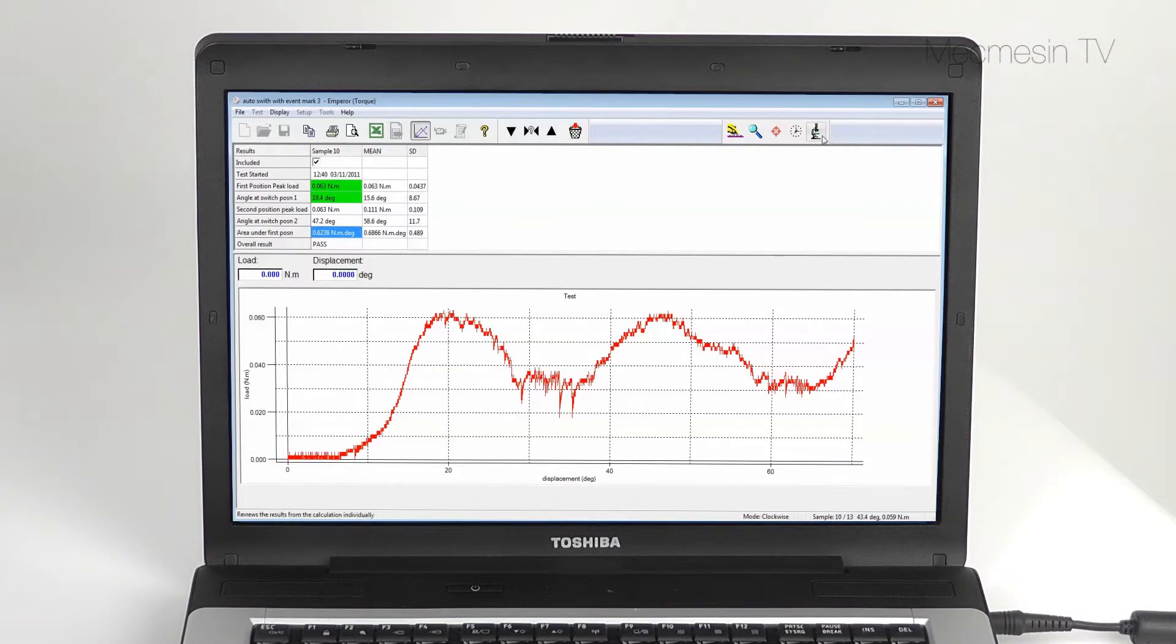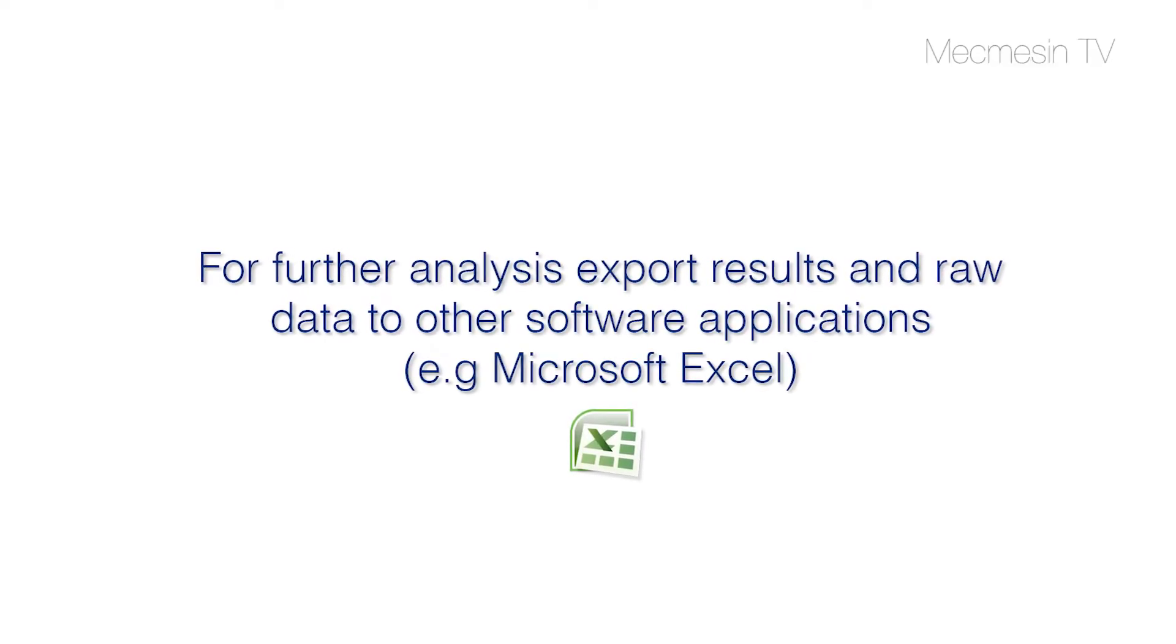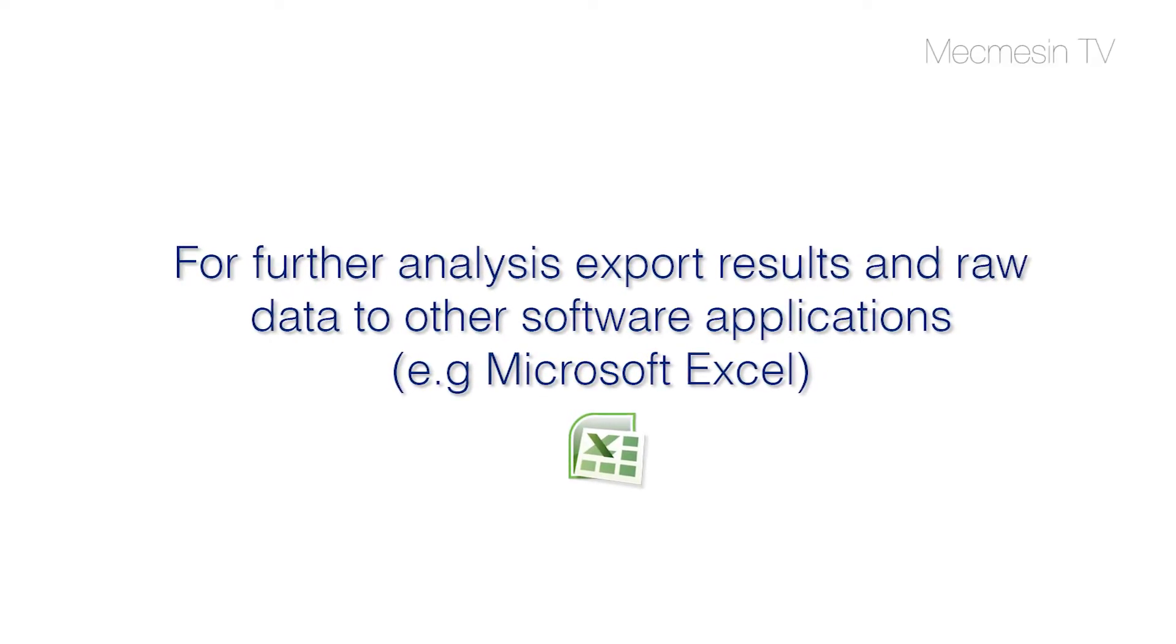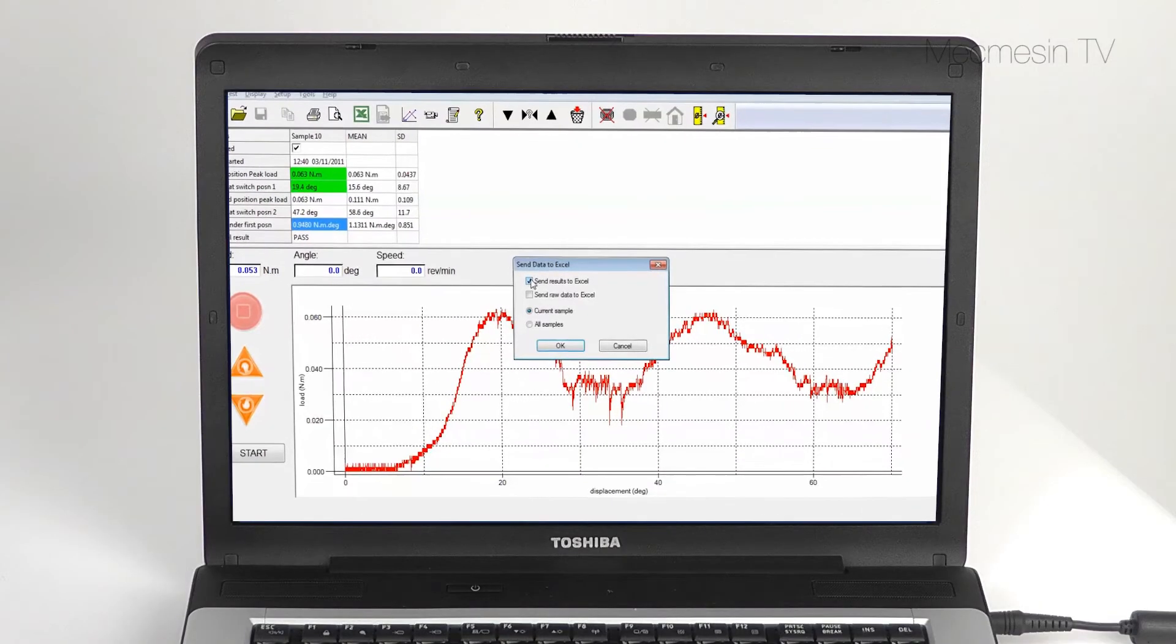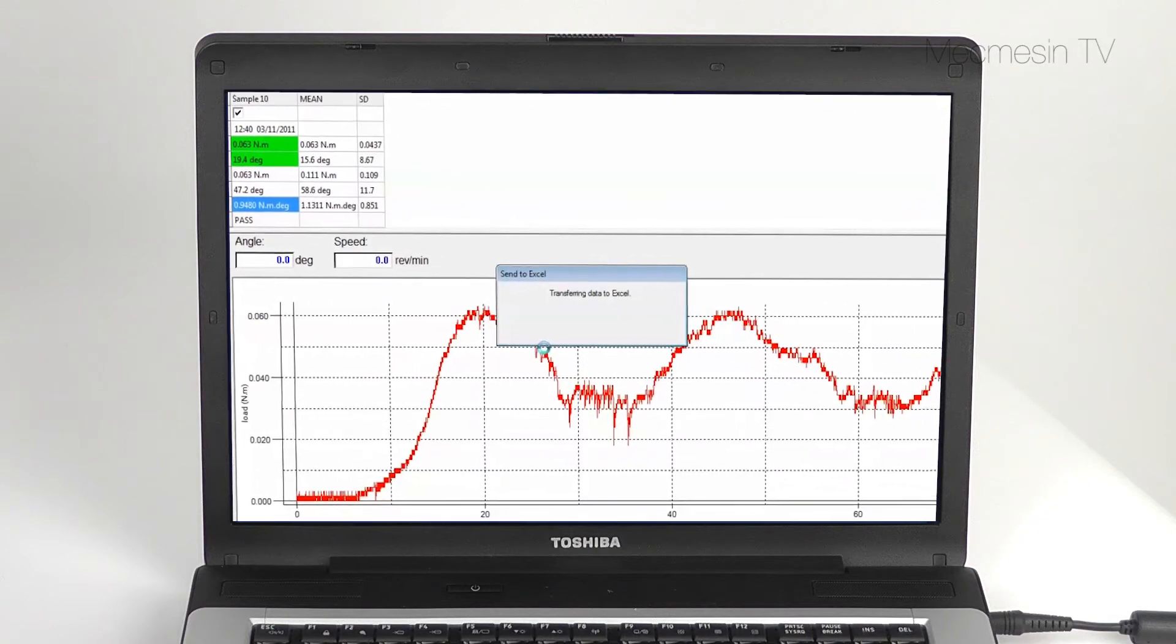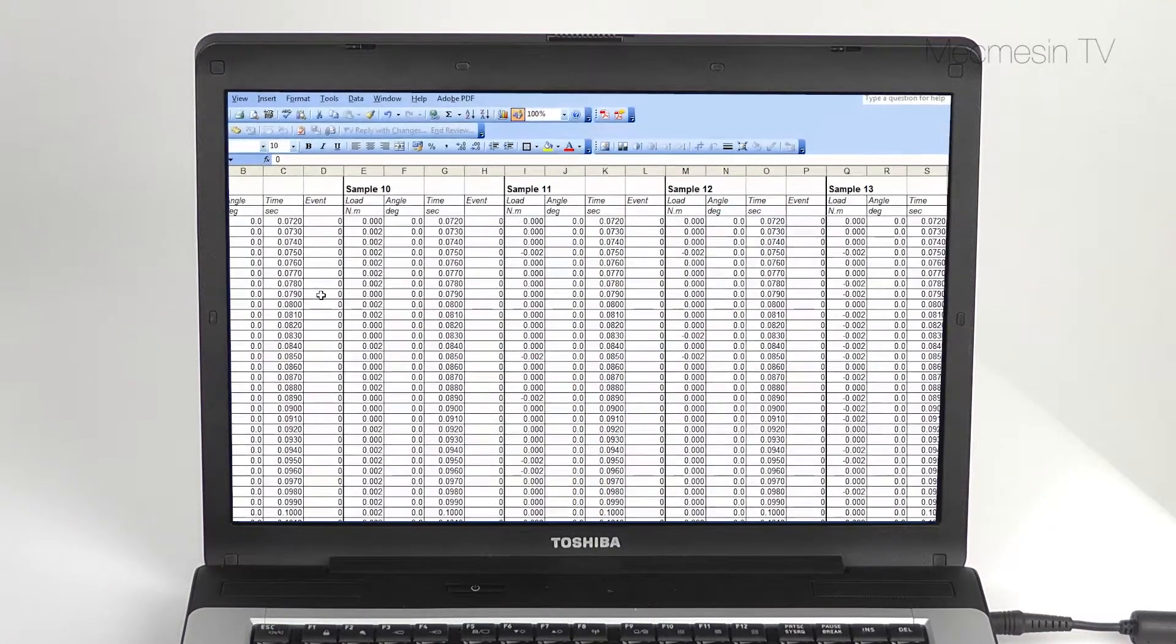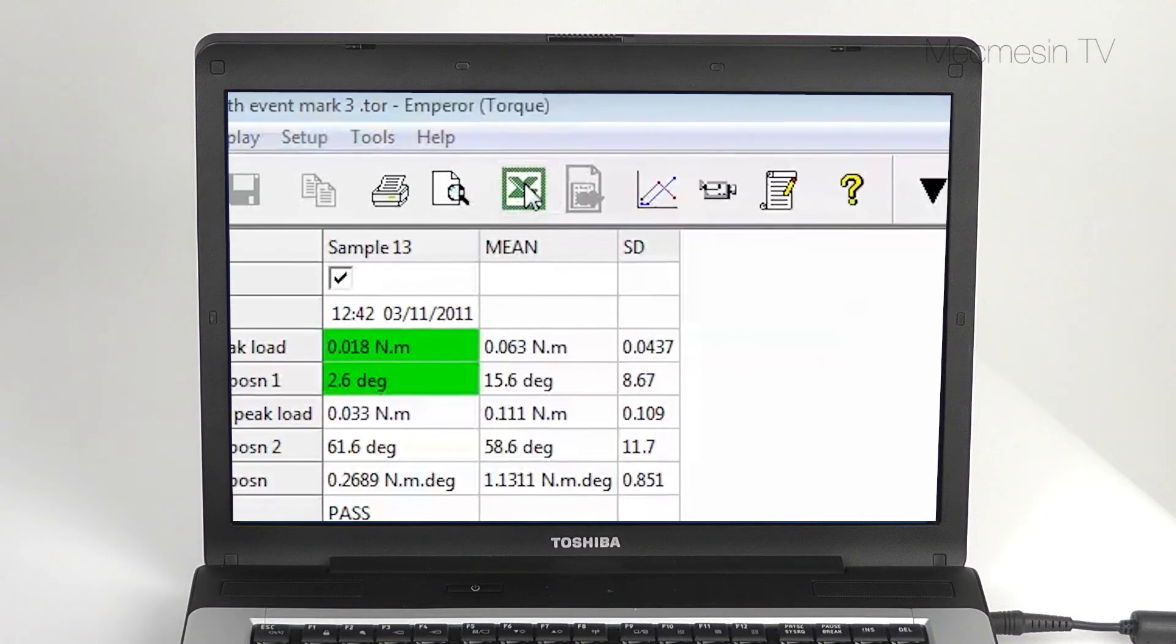Emperor has a suite of standard calculations and some powerful interactive tools that can be used to analyse test data. Results and raw data can be exported to other software packages. In particular, transferring data to Microsoft Excel has been made especially easy with a dedicated Export to Excel icon on the toolbar.